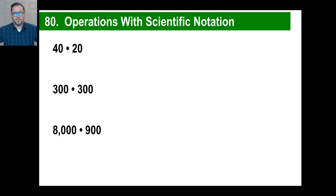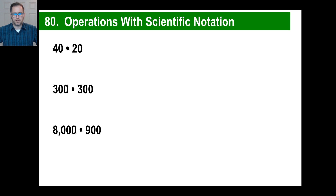Hey guys, let's look at some scientific notation. This is very handy stuff we're going to do today. It'll really help you with things like biology and chemistry. Saxon puts in here a really neat way to do this. So when you get to a chemistry class, one of the things that kills you sometimes in chemistry and biology is the math.